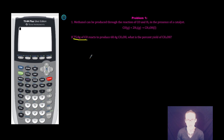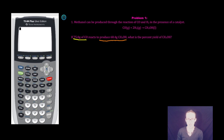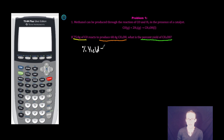If 75 grams of CO reacts to produce 68.4 grams of CH₃OH, what is the percent yield of CH₃OH? To solve this problem, we need to recognize that percent yield is equal to the actual yield divided by the theoretical yield times 100.